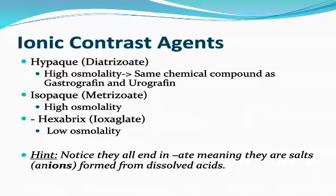Common examples of ionic contrast include Hypaque (diatrizoate), which has high osmolality and is the same chemical compound used in Gastrografin or Urografin. Other common ionic contrast agents still used are Isovue and Hexabrix. Isovue has high osmolality; Hexabrix is an ionic agent that does have low osmolality.